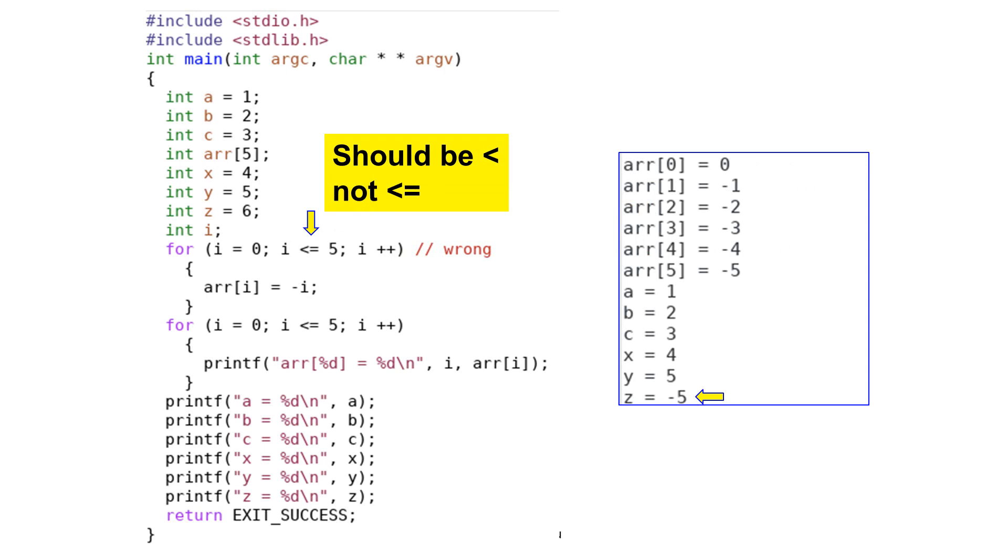Consider this example. The program has local variables a, b, c, x, y, and z. Their values are 1, 2, 3, 4, 5, and 6.